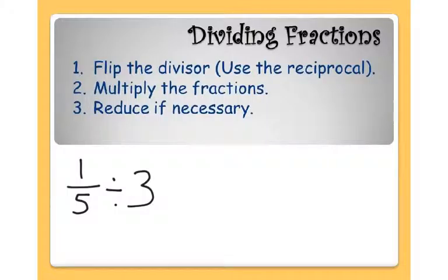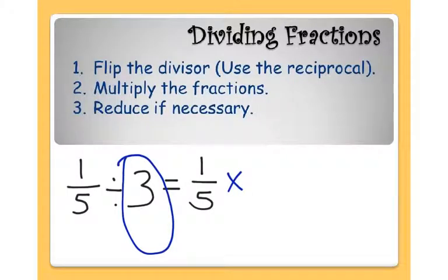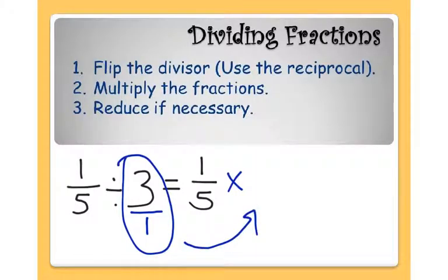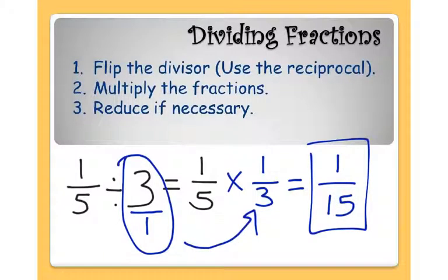The final type of problem we're going to look at is when you have a fraction divided by a whole number. I still need to turn this into a multiplication problem, so I'll start by rewriting my 1 fifth, and I'm going to multiply it by the flipped version of 3. But 3 is a whole number and not a fraction, so in order to flip it, I need to write it as a fraction: 3 over 1. Now I can flip that — the reciprocal of 3 over 1 is 1 over 3. And now I multiply: 1 times 1 is 1, 5 times 3 is 15. So the answer to 1 fifth divided by 3 is 1 fifteenth.